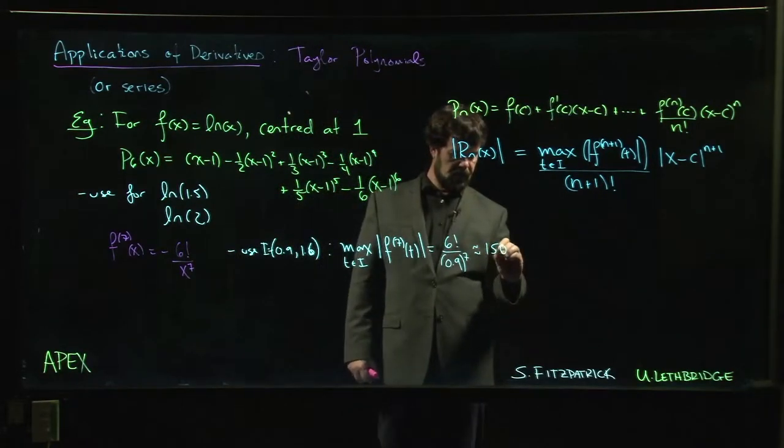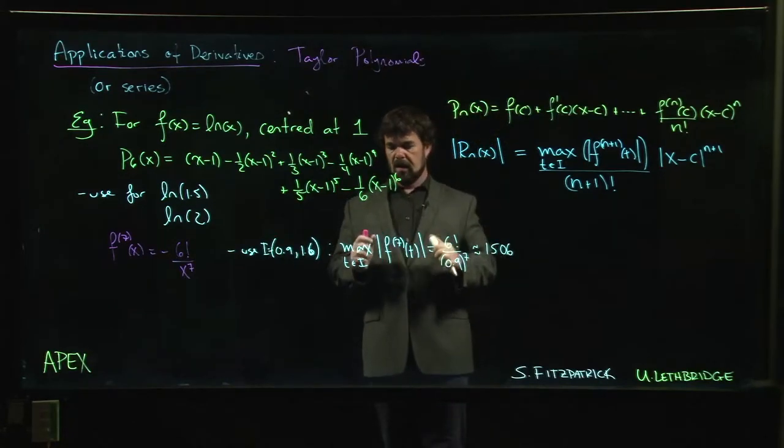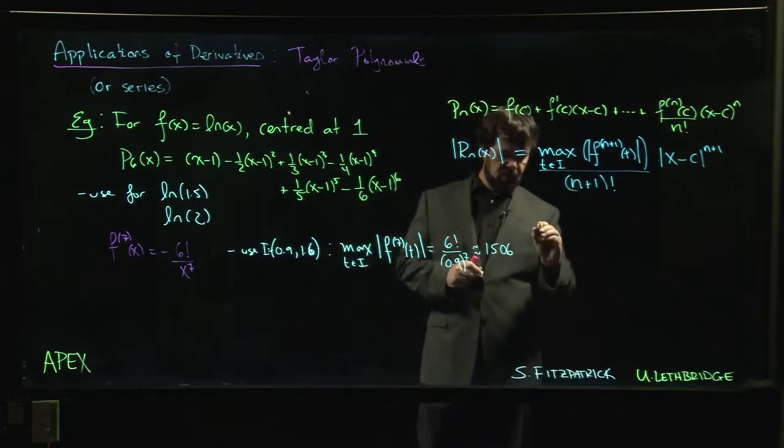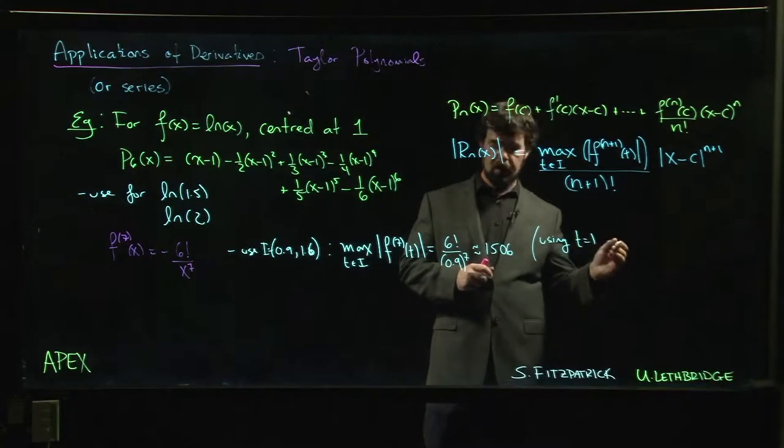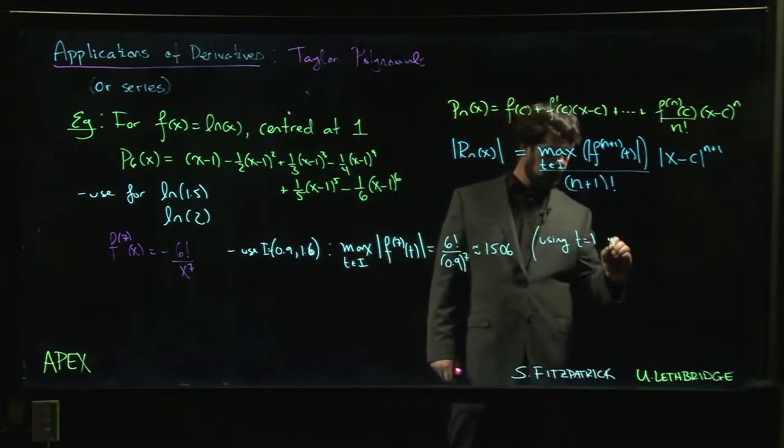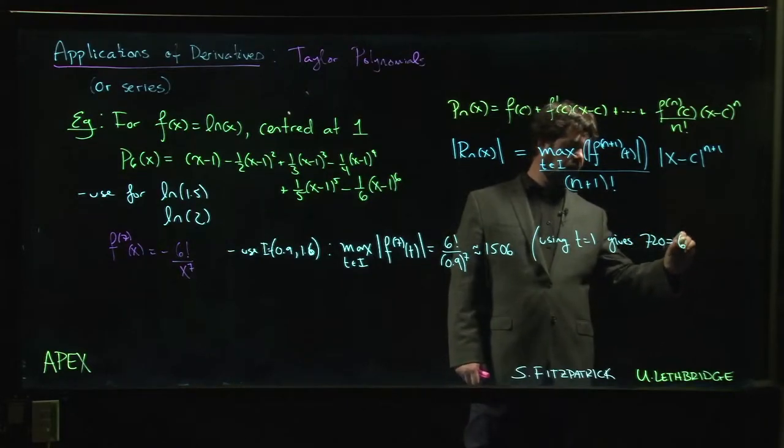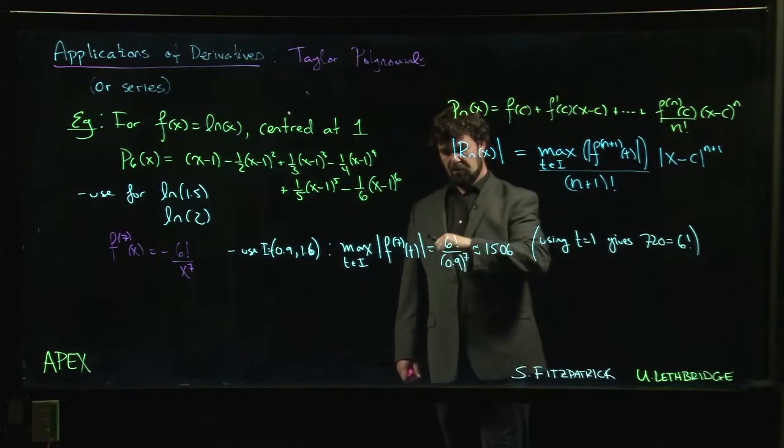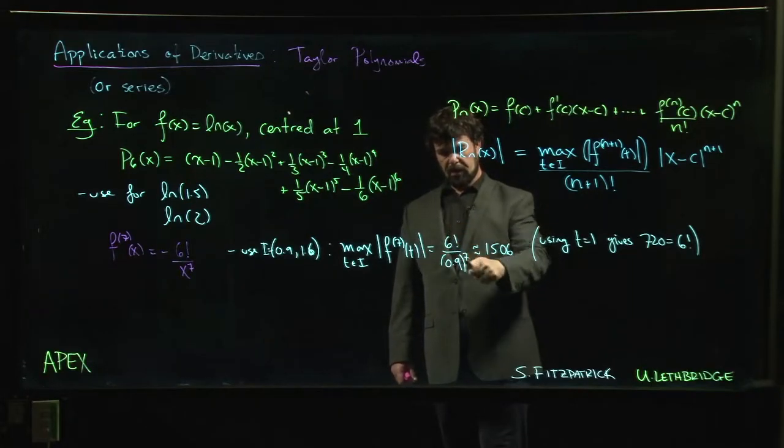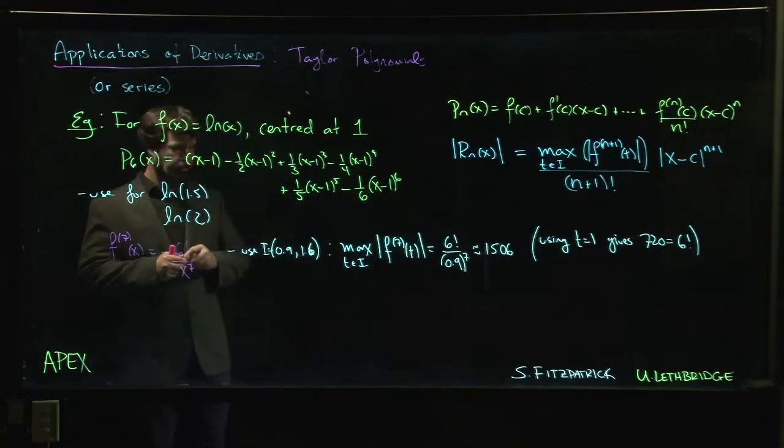Alright, if you decided that you wanted to do just t equals 1, if we went from 1 to 1.5, you'd get 720, which is 6 factorial. So our estimate here is about twice as big. You think 0.9 is pretty close to 1, but once you raise it to a high enough power, it definitely has an effect.